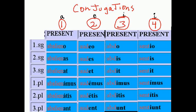Conjugations. First conjugation, dominant A sound. Second conjugation, dominant E sound. Third conjugation, dominant I. Fourth conjugation, dominant I sound.